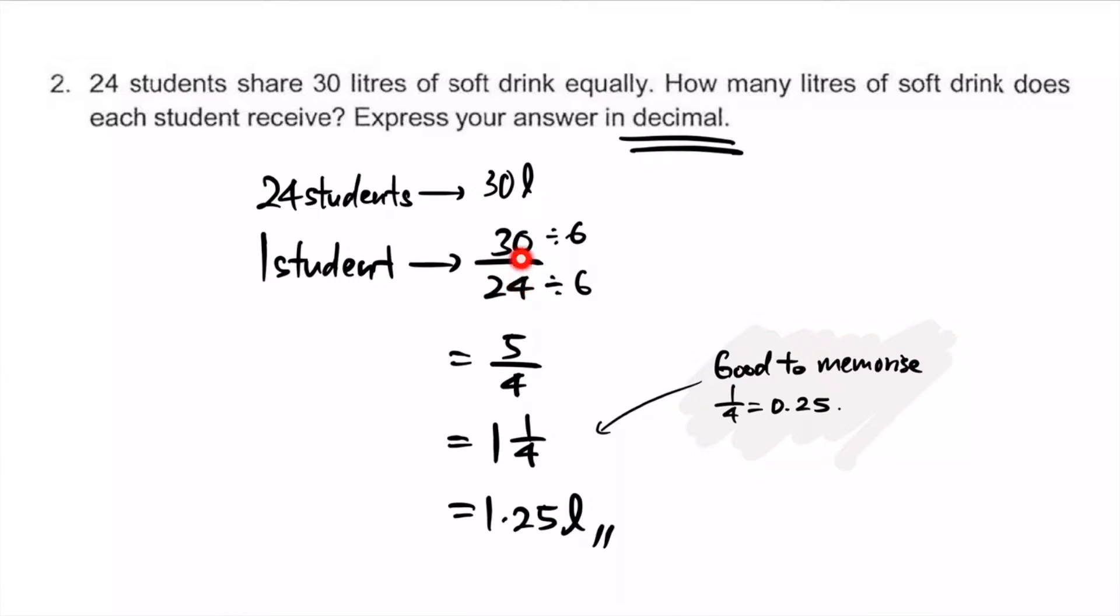Bearing in mind these two are multiples of six, we can divide by six and simplify. Improper fraction, turn it into a mixed number. If you know one quarter is 0.25, that's a quick way to get the answer. This is the final answer: 1.25 liters. Remember, special requirements - pay attention to them.